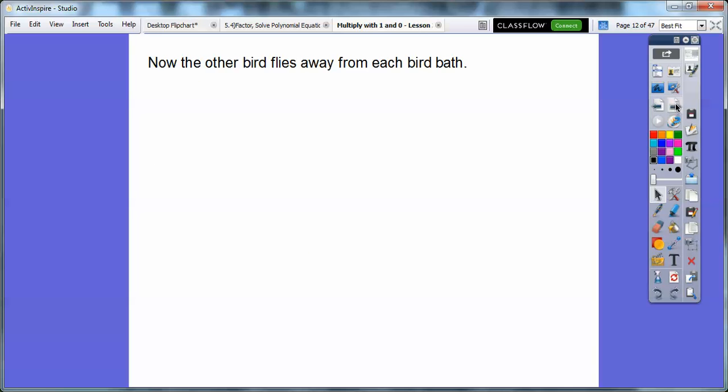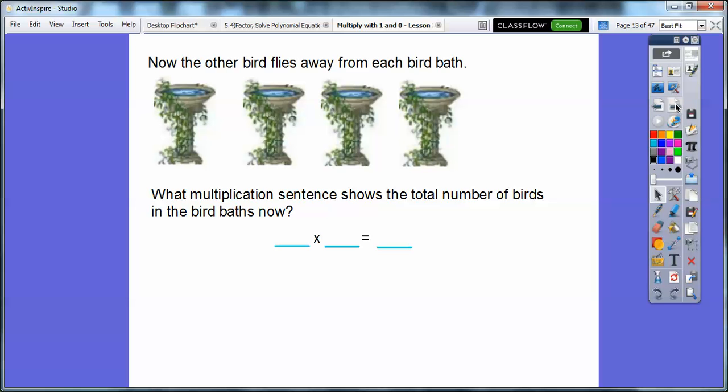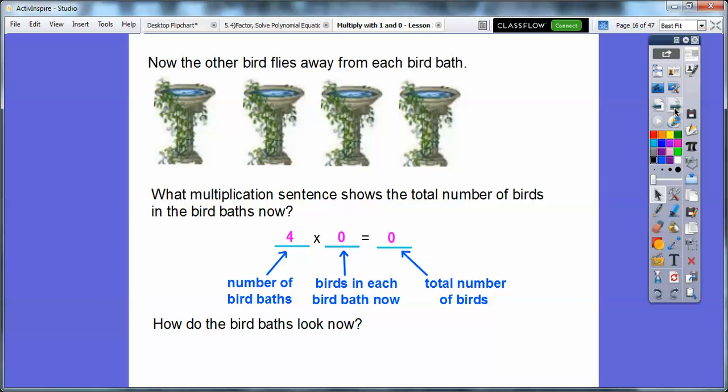So that's going to be one of our magic formulas here shortly. Now the other bird flies away from each of the birdbaths. What multiplication shows the total number of birds in this birdbath now? Well, we still have four birdbaths, but there's no birds in each bath. So it would be four times zero equals zero because there's zero birds left. The total number of birds is still zero.